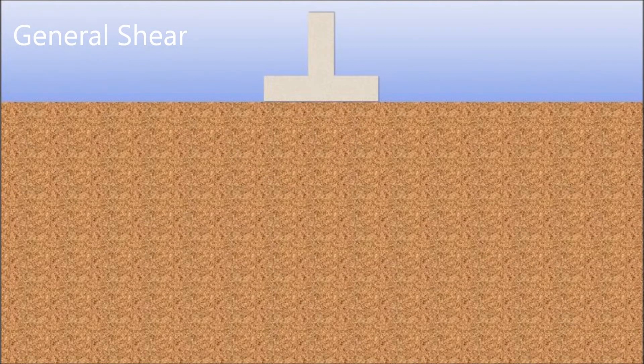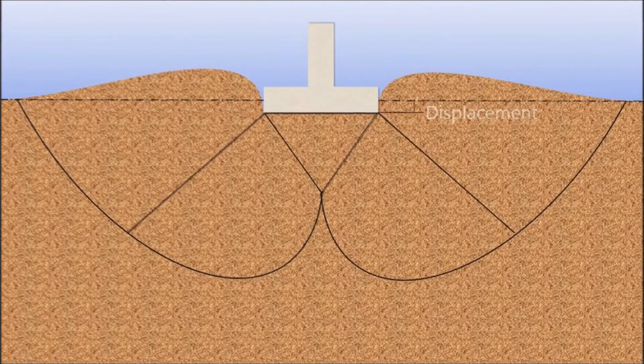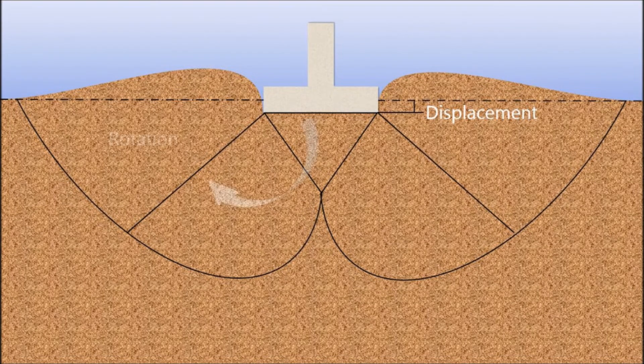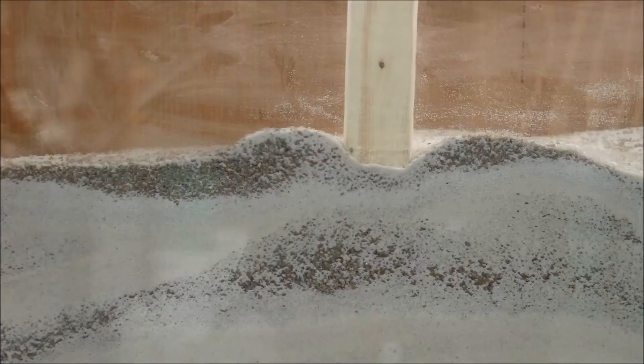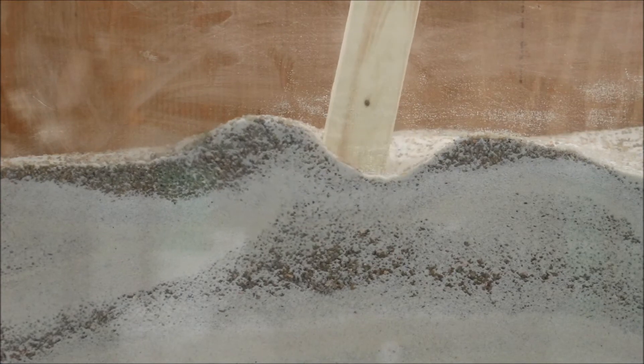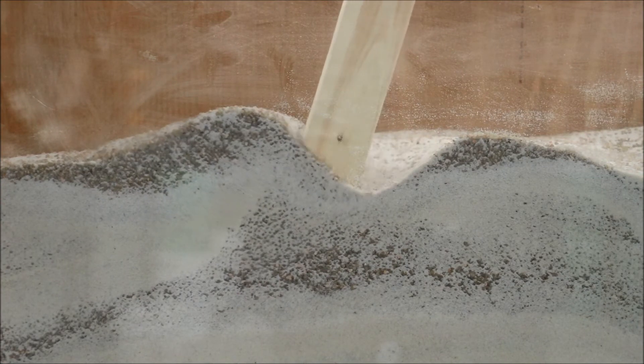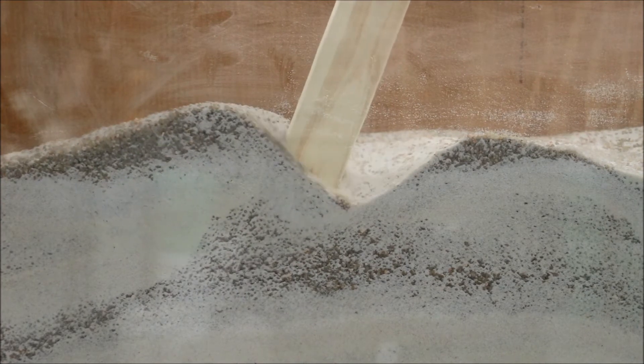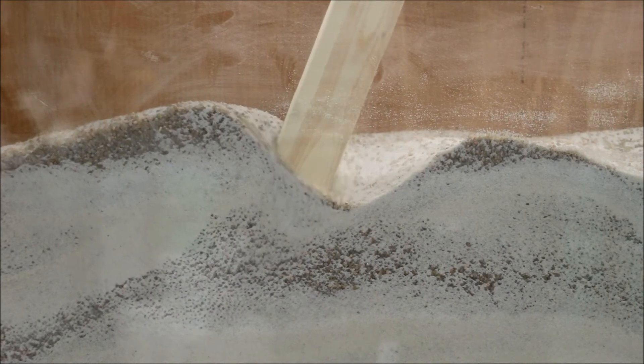General shear failure occurs in dense cohesionless soils and undrained cohesive soils. General shear failure is characterized by a well-defined shear plane with clearly formed disturbances in the surface soils. This type of failure occurs suddenly and can cause significant rotation of the structure.